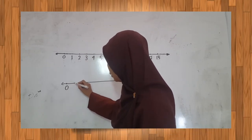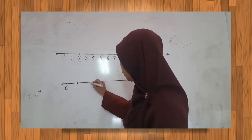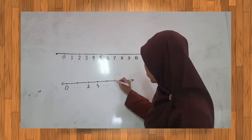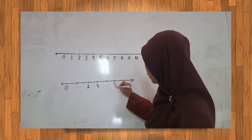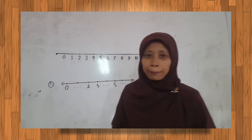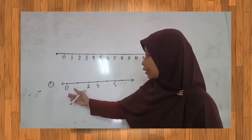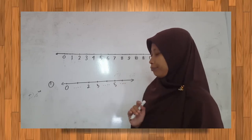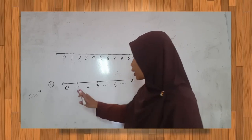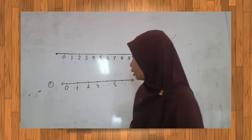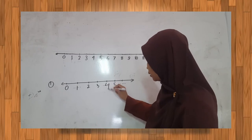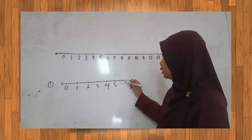0, 2, 3, 5. Contoh soal yang pertama: berapakah nilai pada masing-masing titik-titik yang ada di bawah ini? Oke teman-teman, habis angka 0 berapa? Betul, angka 1. Maka ini kita tulis angka 1. Habis angka 3 berapa? 4, iya, tulis. Habis angka 5 berapa? 6.